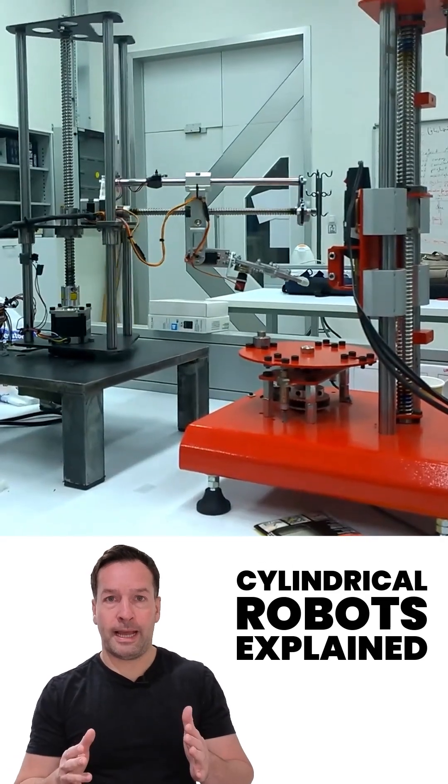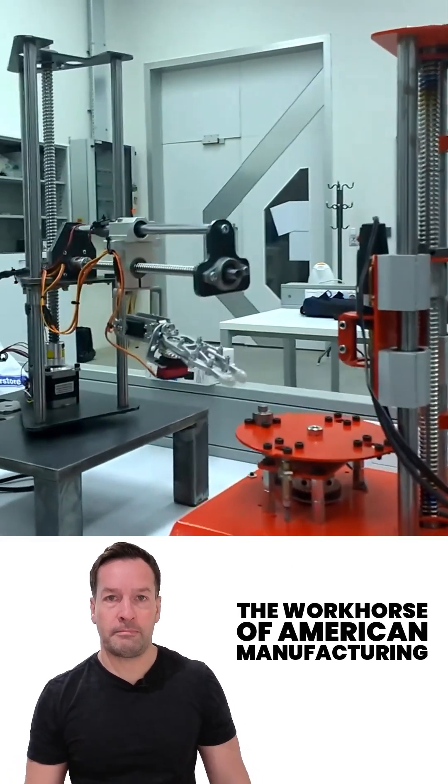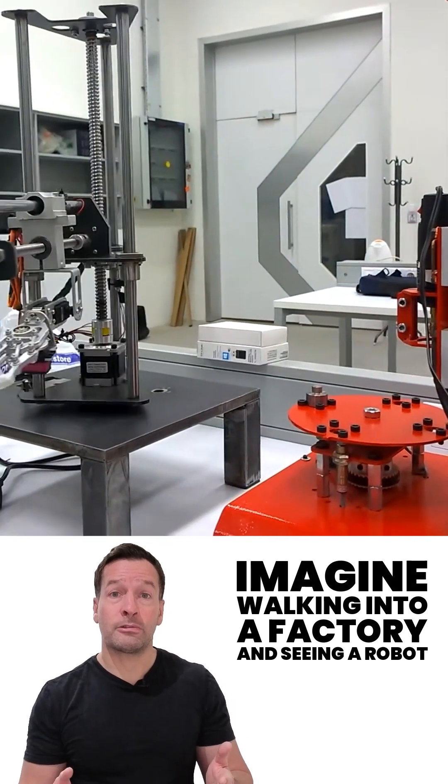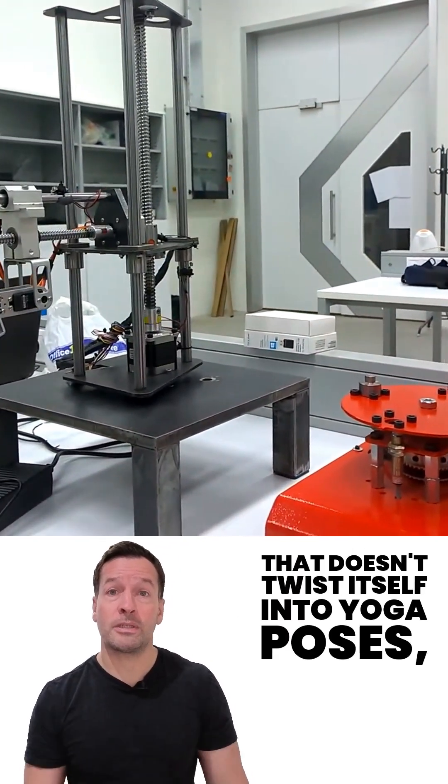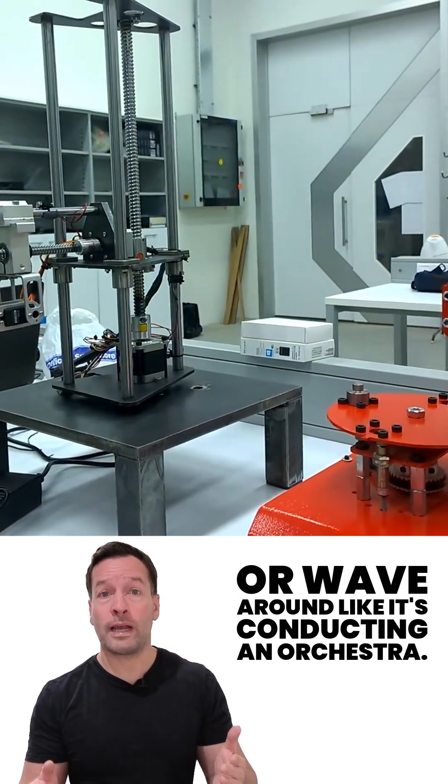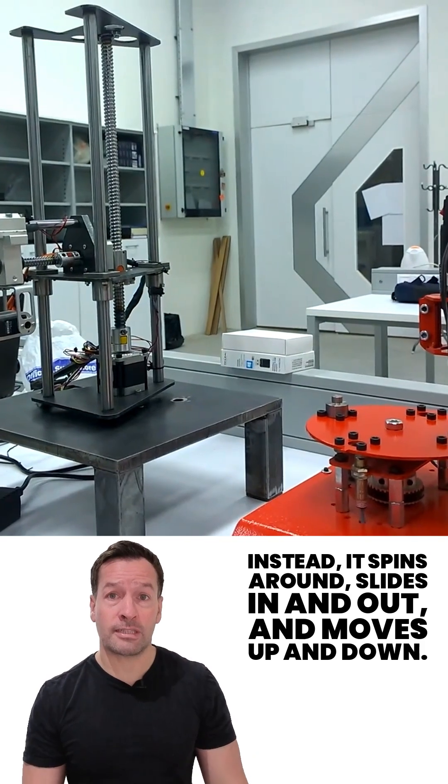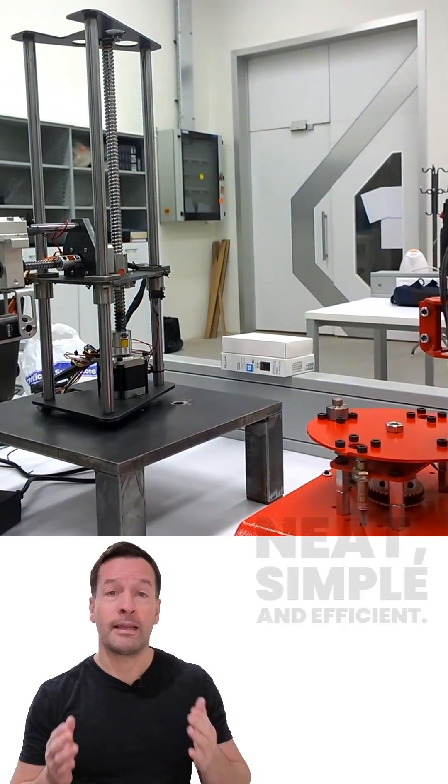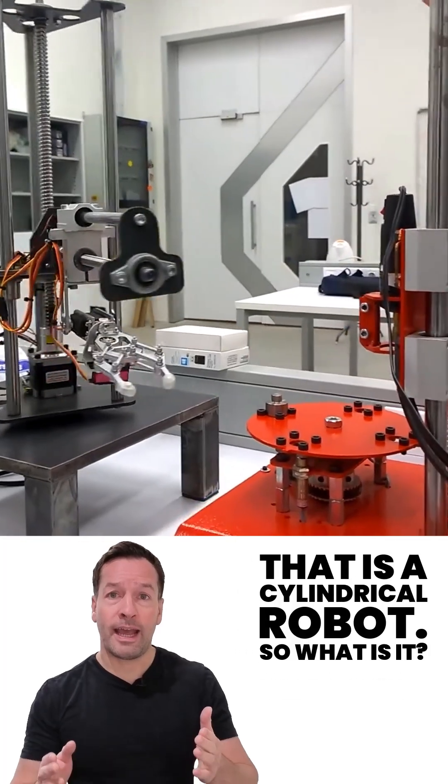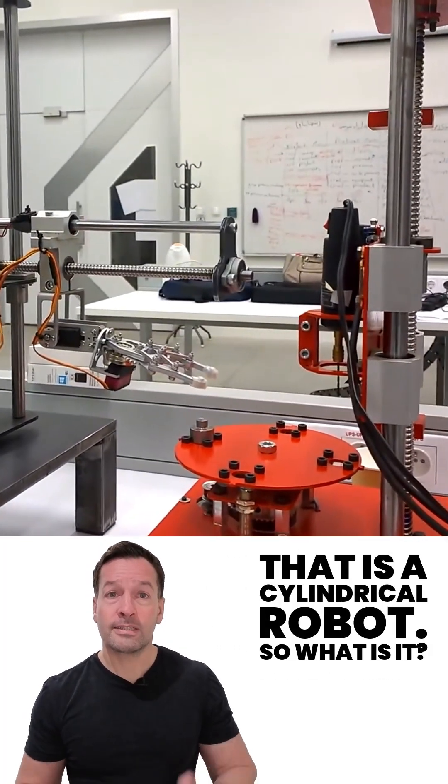Imagine walking into a factory and seeing a robot that doesn't twist itself into yoga poses or wave around like it's conducting an orchestra. Instead, it spins around, slides in and out, and moves up and down. Neat, simple, and efficient. That is a cylindrical robot.